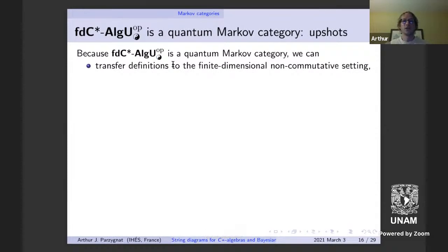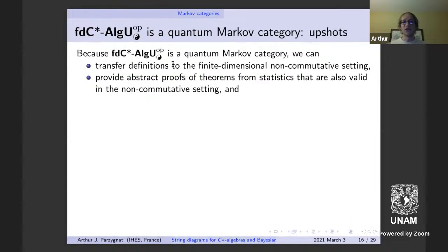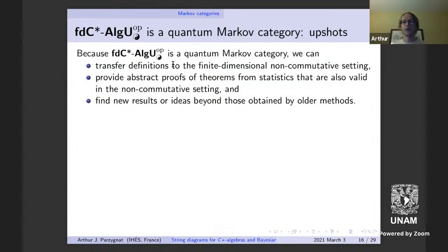What can we do with this? We can transfer definitions like Bayesian inversion to the finite dimensional non-commutative setting. We can provide abstract proofs of theorems from statistics that are valid in the non-commutative setting, being careful about the modified commutativity axiom. And we can hope to find new results beyond those from older algebraic methods of non-commutative probability.